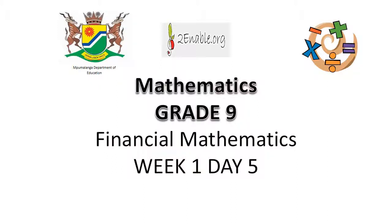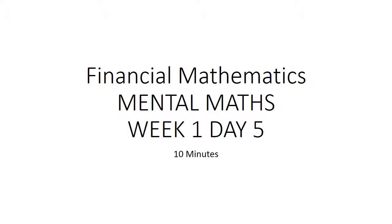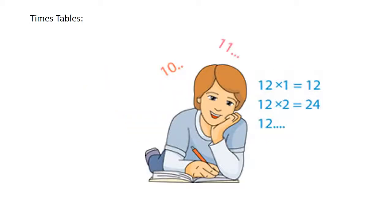Financial mathematics. Mental math. Times tables. 6 times 11 equals 66. 6 times 7 equals 42.